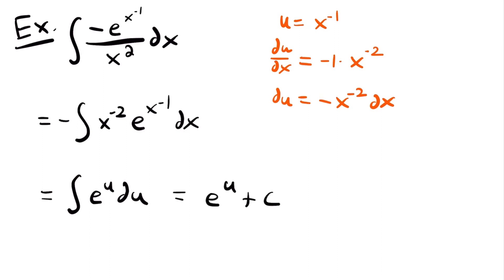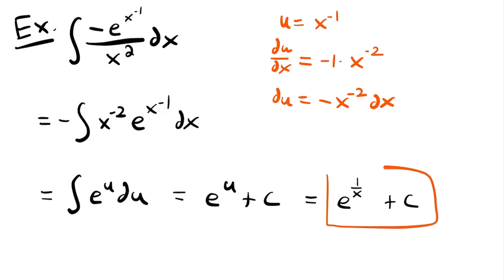All we have to do now is replace u with what we set it equal to — x to the negative first power — giving e to the power of x to the negative first power plus c. We can rewrite x to the negative first power as 1 divided by x, so our final answer is e to the power of 1 divided by x plus c. That is the antiderivative of this function.